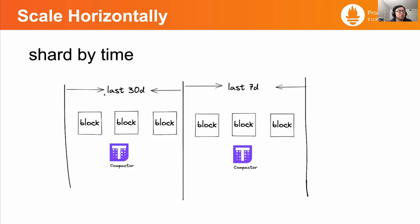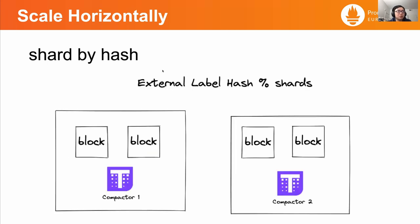Another way to go is to scale horizontally, and there are actually two approaches. One way is to shard by time — for example, we can have two compactors where one takes care of blocks produced last week, and another takes care of blocks produced last month. Another way is to shard blocks by their external labels, grouping blocks from the same clusters together to the same compactor. In both ways, we successfully distribute blocks to different compactor instances.